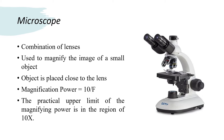It is a combination of lenses to magnify the image of a small object. The object is placed close to the lens to obtain as high a magnification as possible. The distance from the lens to the object is adjusted until the object is focused. The simple form of a microscope is a single converging lens, often referred to as a simple magnifier.